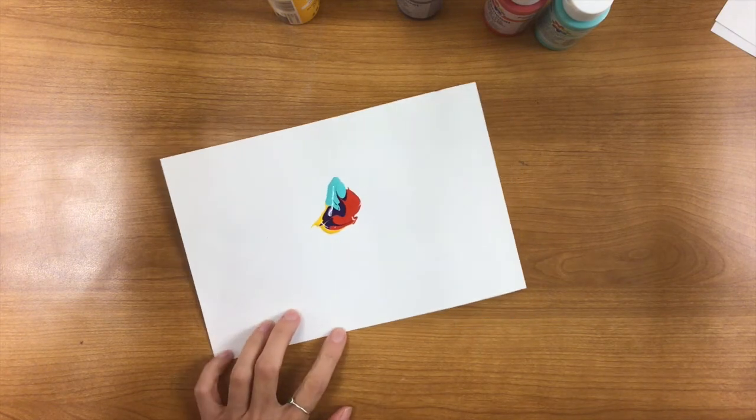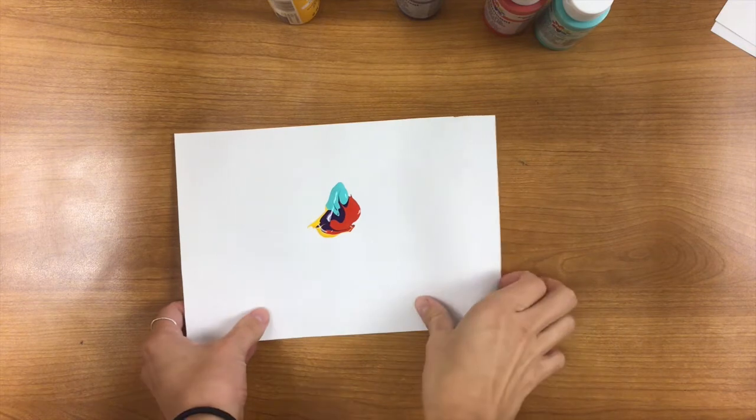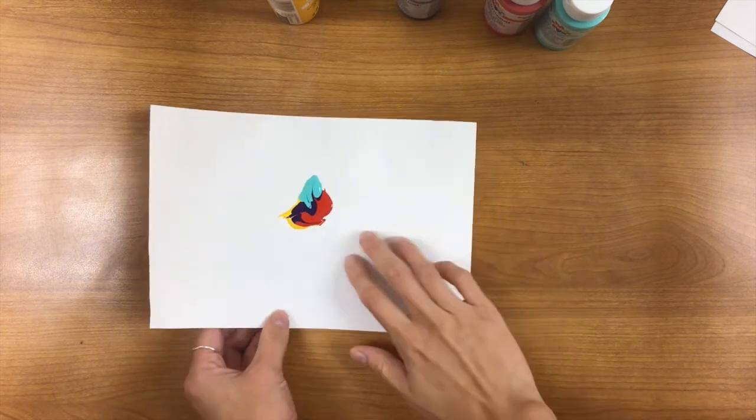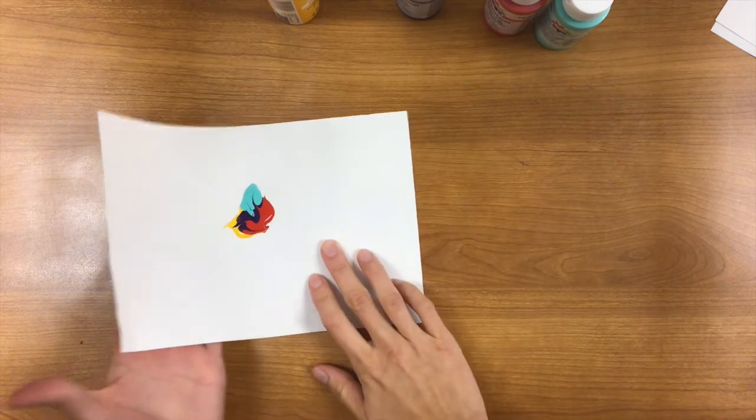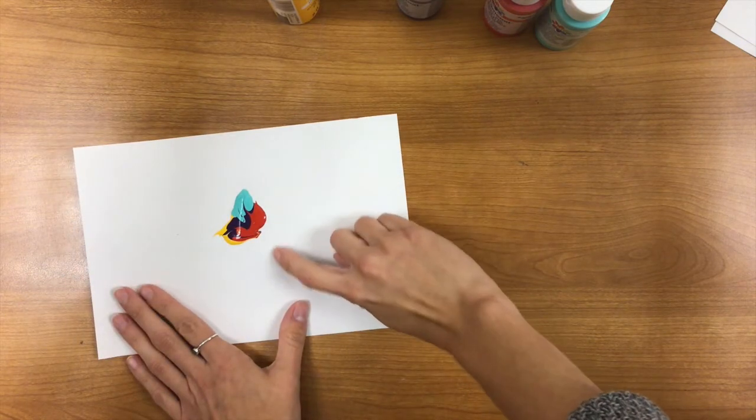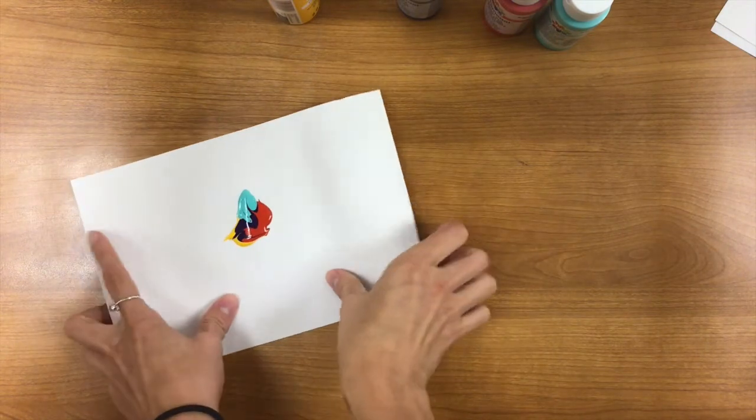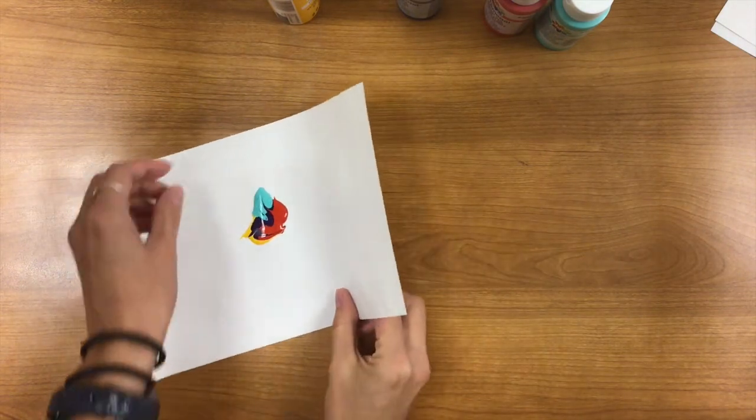Alright, so after you've taken tons and tons of photographs of that blob, you can go ahead and set that blob aside. If you would like to, before you set it aside, if you would like to gently fold it, I would recommend trying to make the fold on the edge just so it ends up kind of symmetrical but not quite all just smooshed together.